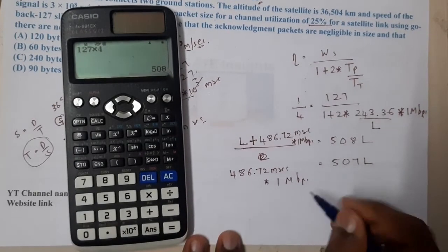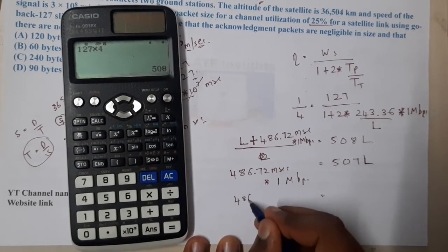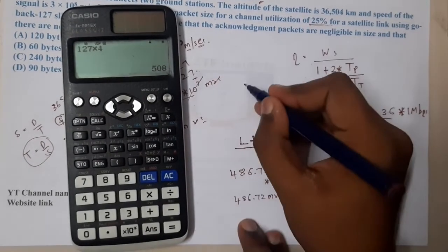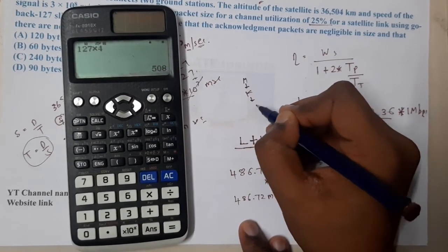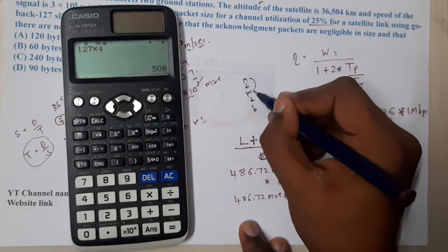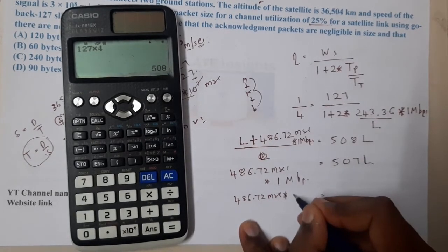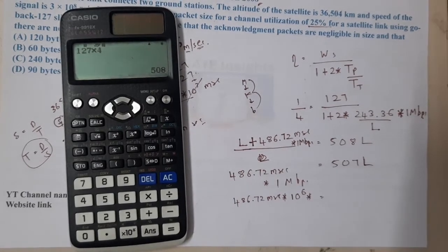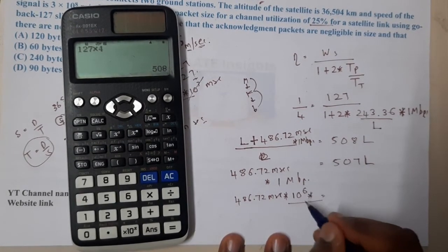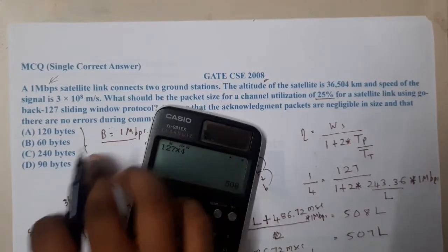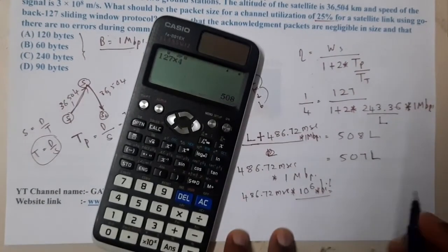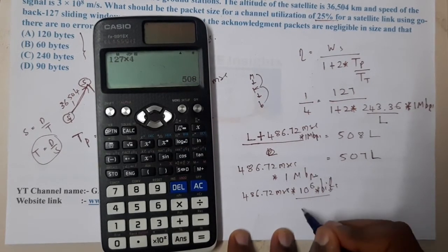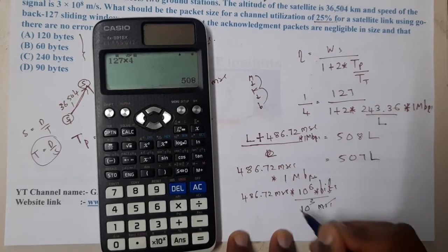In the denominator, we have seconds, so 1 second is 10^3 milliseconds. To cancel the millisecond part, we divide by 10^3. This simplifies to 486.72 × 10^3. I don't know why I converted to milliseconds—it just created confusion.